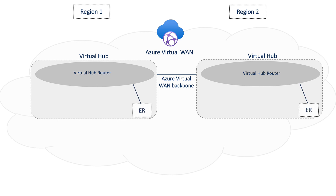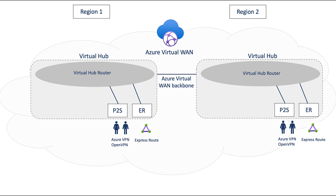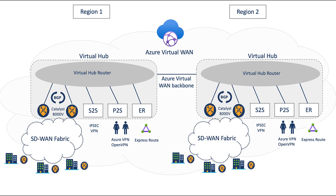This includes ExpressRoute Gateway for private circuits, Point-to-Site Gateway for users with Azure and/or OpenVPN, and Site-to-Site Gateway for IPsec. Now, thanks to our strong partnership and engineering collaboration with Microsoft, Cisco can also deploy Catalyst 8000v routers inside the virtual hub. This allows for SD-WAN connectivity and all of its benefits. By connecting workload VNets to the virtual hubs, we make them available to all the network service endpoints and our virtual routers, both locally and across regions.